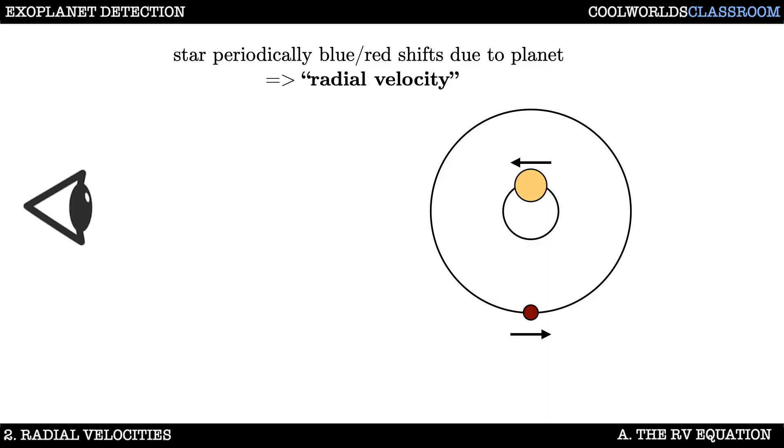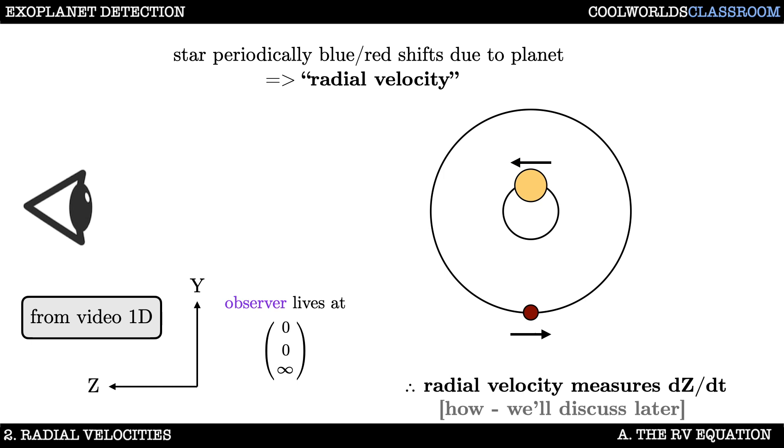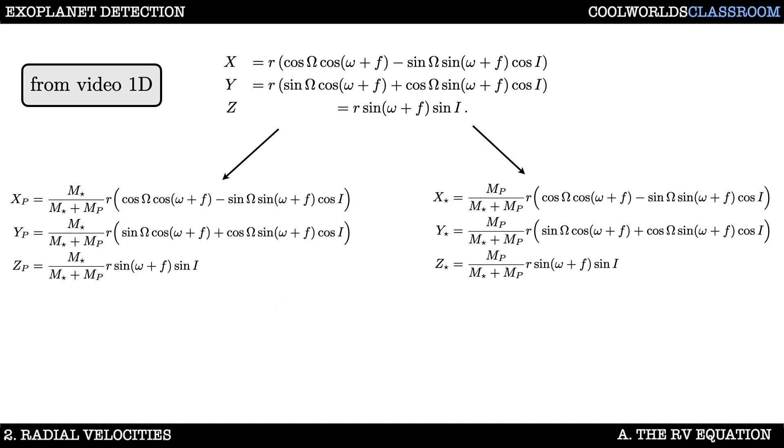Here we see a snapshot of a star moving towards us in response to its planet. This is often dubbed reflex motion. In this snapshot the star is moving towards us and so it would appear blue shifted. Now recall from video 1d that we define the observer to lie along the z axis. Since radial velocity exclusively refers to motion along the line of sight, then that means that we are measuring dz/dt. Okay now also from video 1d we obtained these Cartesian orbital elements. The top here is the heliocentric planet positions and the bottom show the planet and stellar motion in the barycentric frame of reference. So that z star term over here is the one that we really care about.